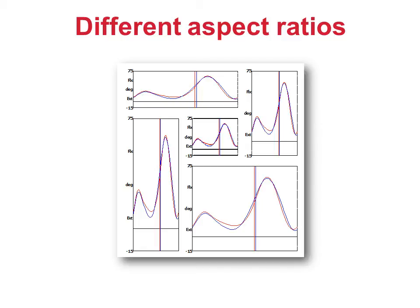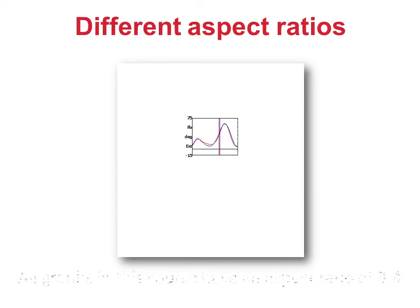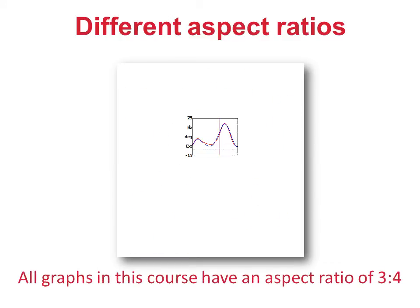The same data can look quite different if it is plotted in different ways. The same data is plotted in all the graphs on this slide. The curves appear very different because the graphs have different aspect ratios, the ratio of the height to the width of the graph. It is useful if we standardize this so it becomes one less thing we have to worry about when interpreting data. All the gait graphs I ever present have an aspect ratio of 3 units of height to 4 units of width.